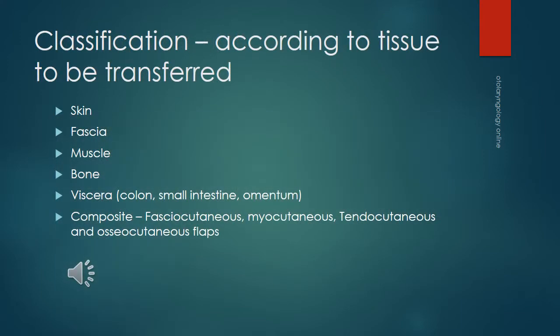Flaps can also be classified according to the tissue being transferred, namely: skin, fascia, muscle, bone, and viscera — for example, colon, small intestine, and omentum. Composite flaps include fasciocutaneous, myocutaneous, tenodcutaneous, and osteocutaneous flaps.